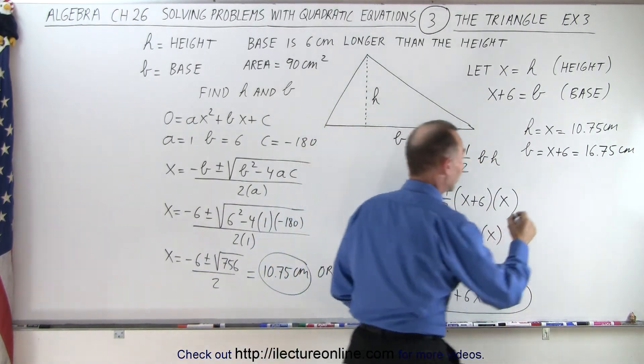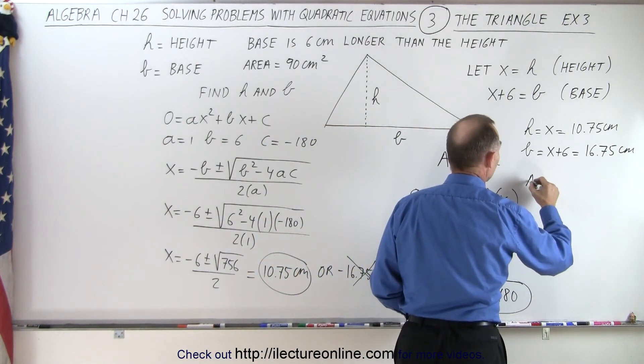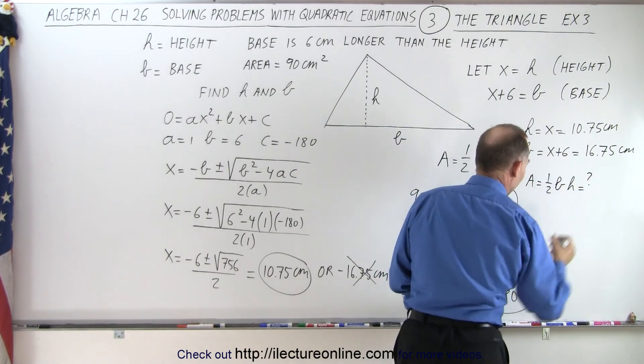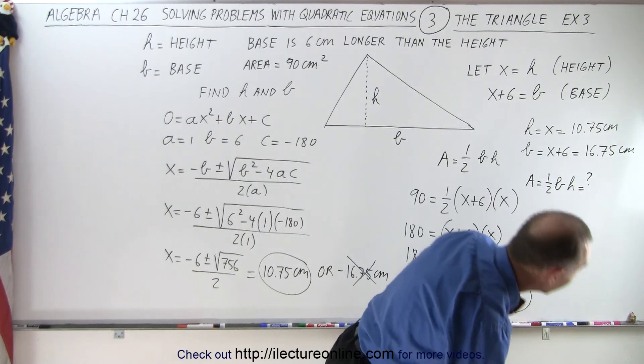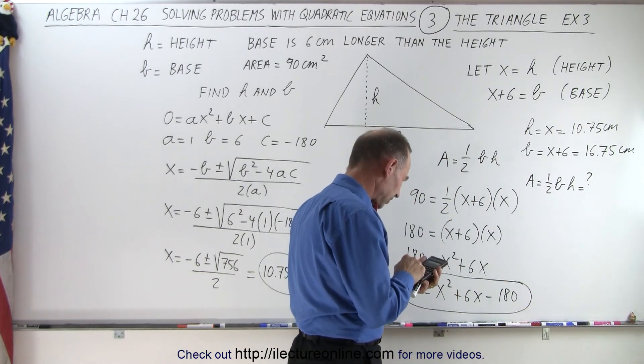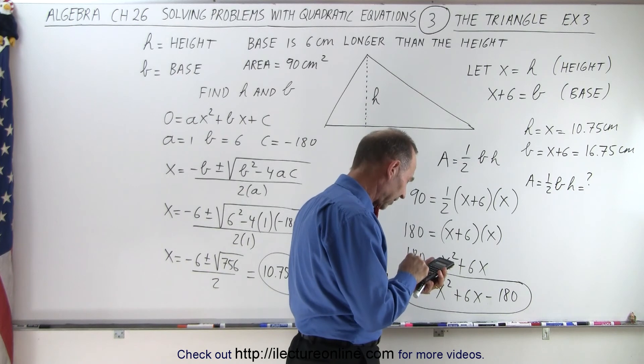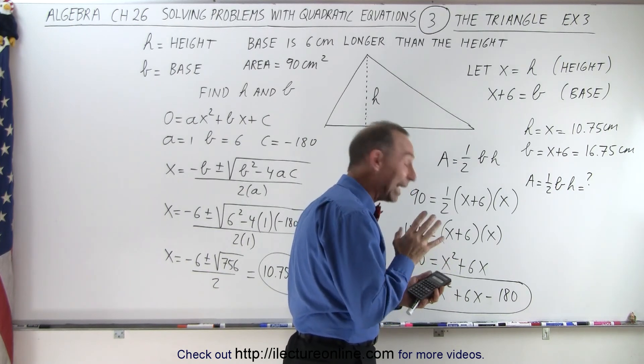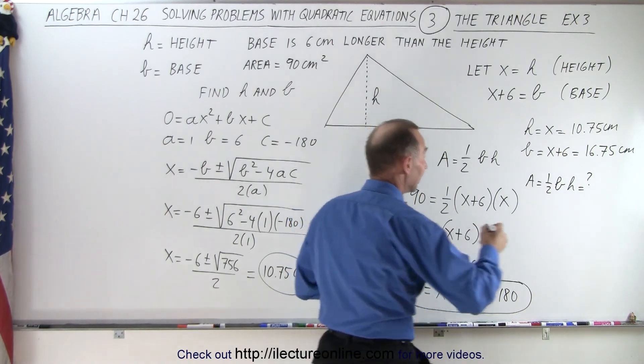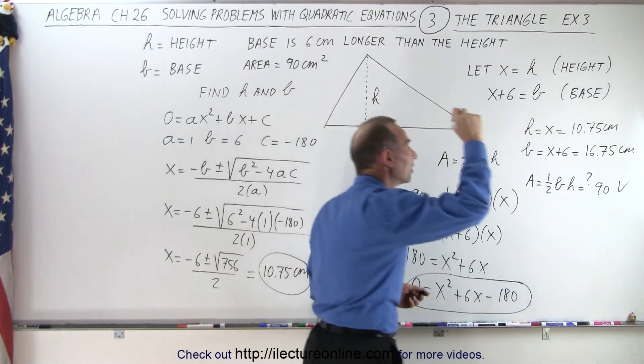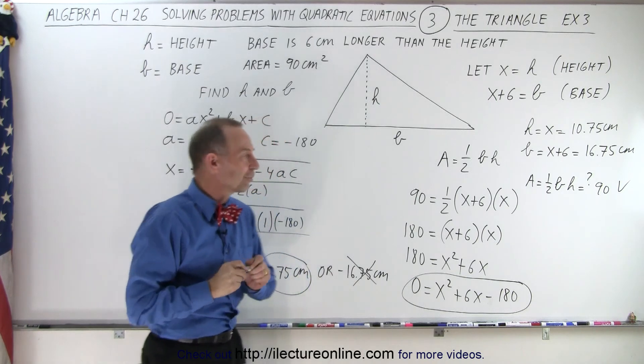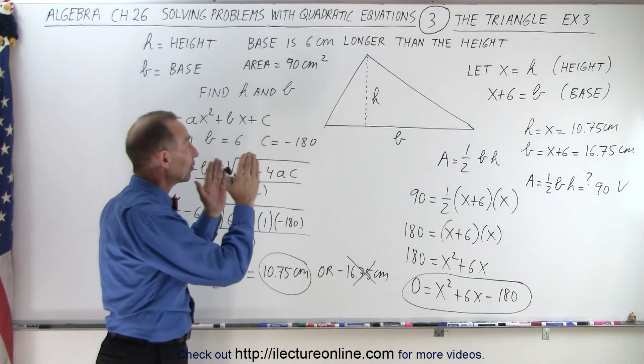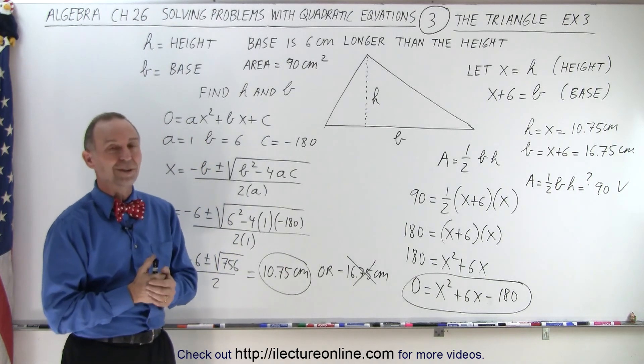Quickly, just to make sure we have it correct, the area equals one-half the base times the height. Let's take 10.75 and multiply that times 16.75 and divide by 2, and we get 90. So it looks like this is indeed 90 square centimeters. That means we found the right height and the right base. And that is how it's done.